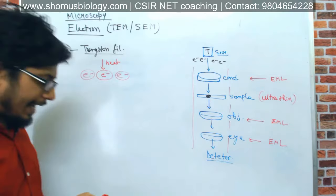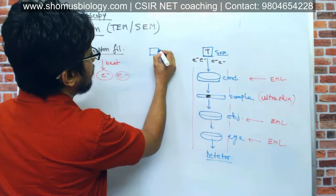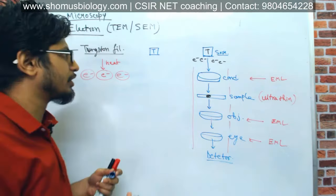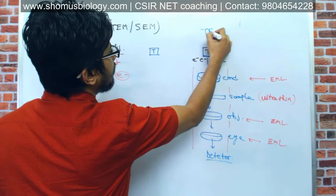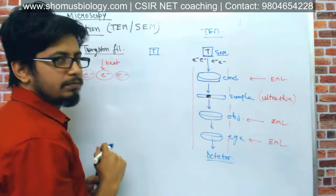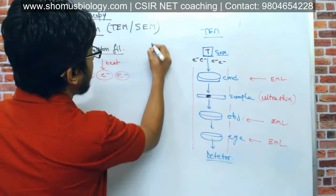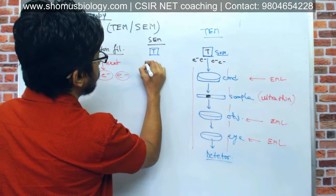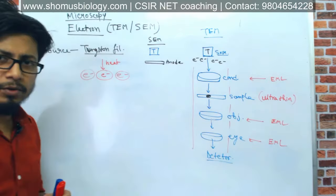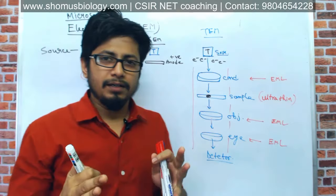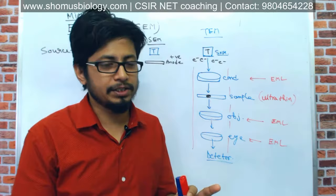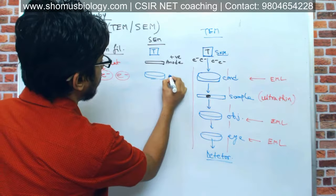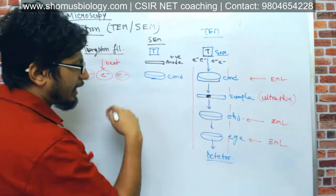In SEM we have the same kind of tungsten filament electron source. Then, unlike in TEM, between the tungsten source and the condenser we have what is known as an anode — a positively charged electrode which directs electrons toward a specific direction because electrons are negatively charged. After the anode we have the condenser, and after the condenser we have another component known as the scan coil.